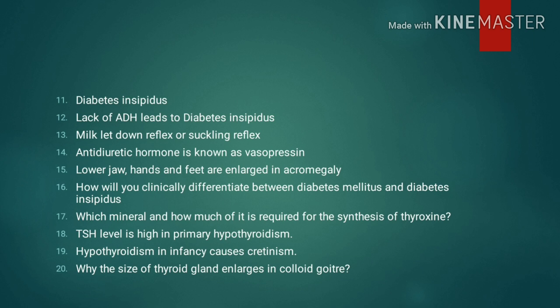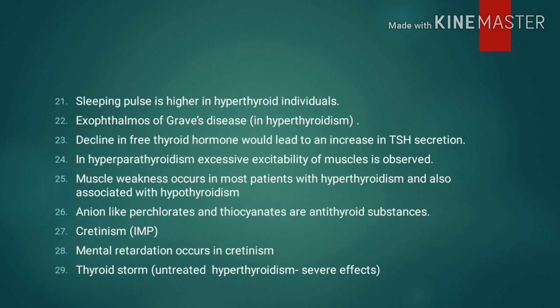Give reasons continued: 10. Urine output is increased in diabetes insipidus. 11. Diabetes insipidus. 12. Lack of ADH leads to diabetes insipidus. 13. Milk let-down reflex or milk ejection reflex. 14. Antidiuretic hormone is also known as vasopressin. 15. Lower jaw, hands, and feet are enlarged in acromegaly. 16. How will you clinically differentiate between diabetes mellitus and diabetes insipidus? 17. Which mineral and how much of it is required for the synthesis of thyroxine? 18. TSH level is high in primary hypothyroidism. 19. Hypothyroidism in infancy causes cretinism. 20. Why does the size of the thyroid gland enlarge in colloid goiter? 21. Sleeping pulse rate is higher in hyperthyroid individuals.